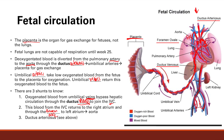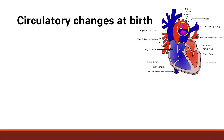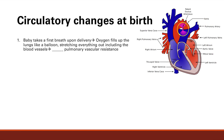These shunts all make complete sense and it's fascinating how they do exactly what we need. At birth, we're going to have circulatory changes to make us more normal. The first change is the baby takes a first breath — oxygen fills up the lungs like a balloon, everything stretches out including all the blood vessels of the lungs. When the blood vessels stretch out, the radius increases, vascular resistance decreases, and it becomes much easier for blood to flow through those vessels.